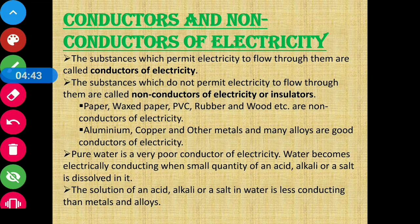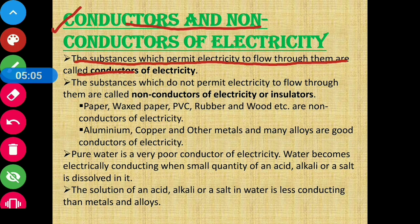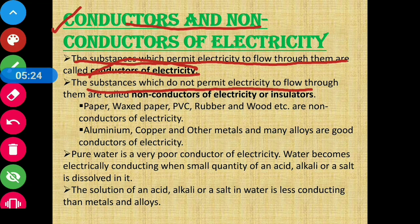Moving on to our next interesting property: conductors and non-conductors of electricity. Just like we discussed heat conduction, the substances which permit electricity to flow through them are called conductors of electricity. And the substances which do not permit electricity to flow through them are called non-conductors or insulators.